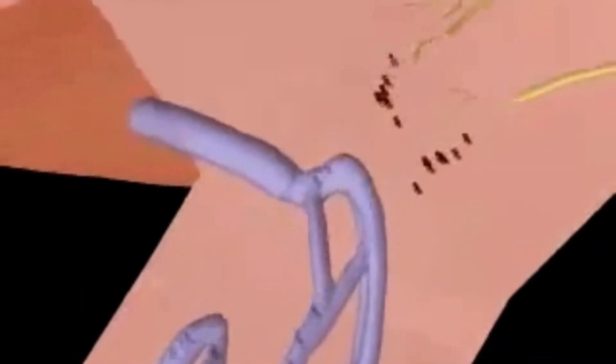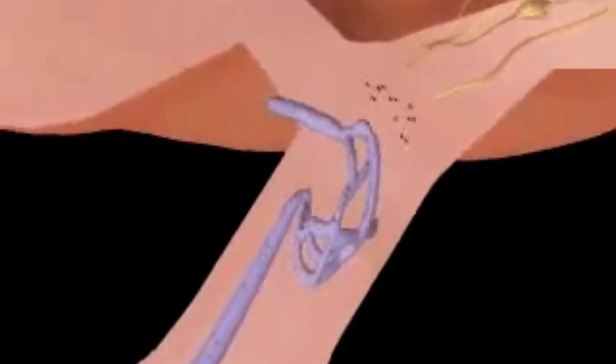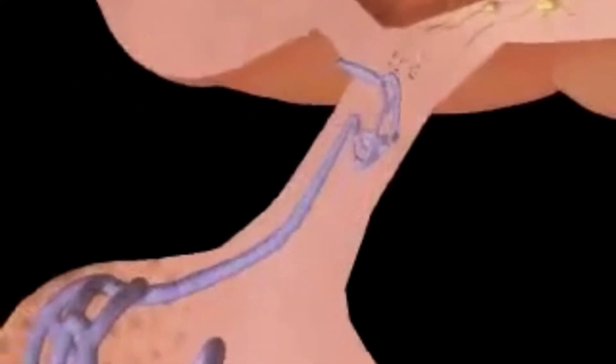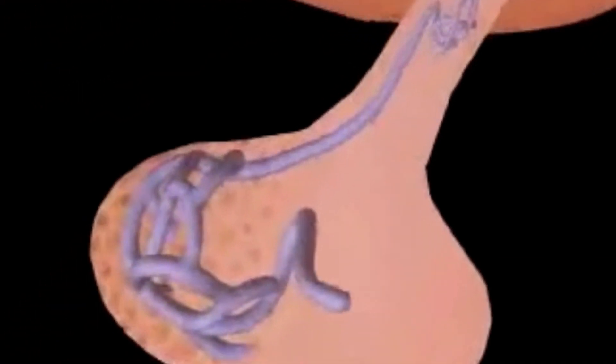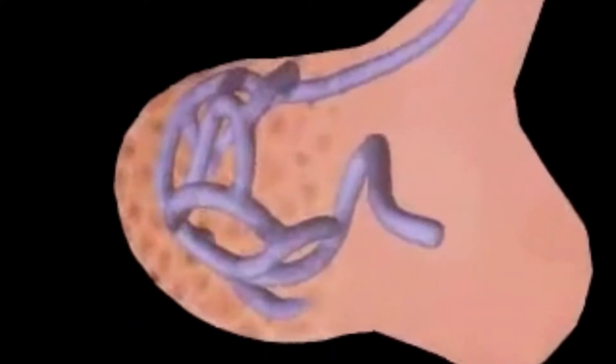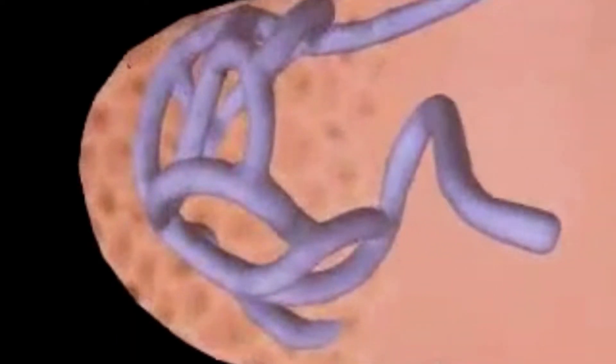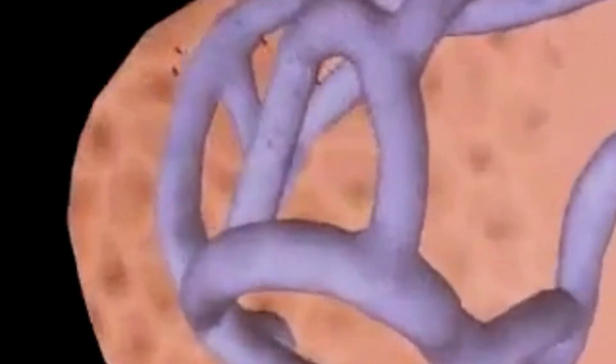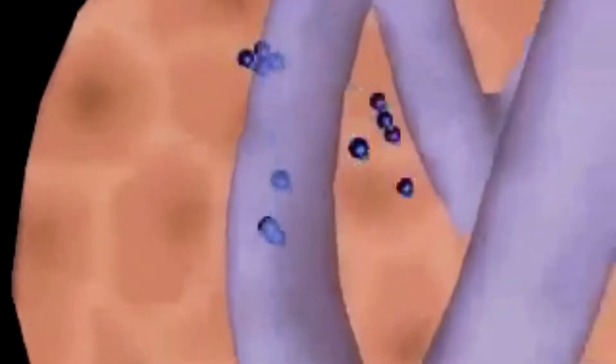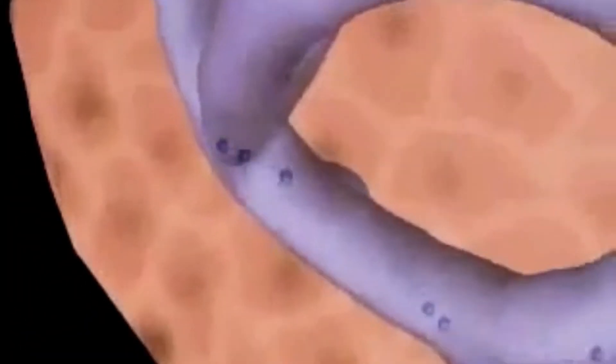Some neurons within the hypothalamus produce and secrete thyrotropin-releasing hormone, TRH. TRH is secreted into the hypothalamo-hypophysial portal vessels and carried into the anterior lobe of the pituitary gland, where it stimulates cells that make thyroid-stimulating hormone, TSH. TRH stimulates the release of TSH from the anterior lobe of the pituitary.